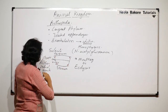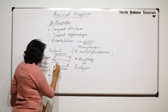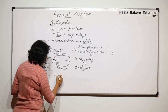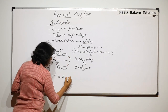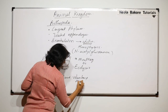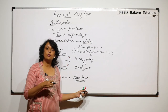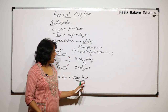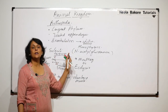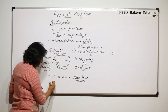Arthropods are the first animals to have voluntary muscles. Previously, animals had only longitudinal and circular involuntary muscles, but Arthropoda is the first phylum to have voluntary muscles. The digestive system is also very well developed.